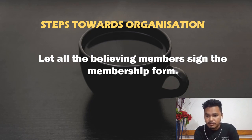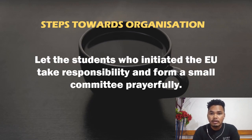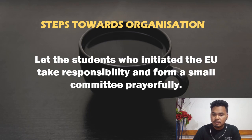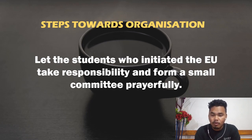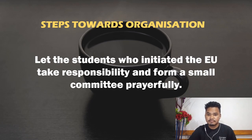Let everyone willing — whether five, six, or many more — sign the membership form. Let the student who initiated the EU take responsibility and prayerfully form a small committee. You must have a president, secretary, and treasurer, and depending on your needs you can add more office bearers such as prayer secretary, mission secretary, music secretary, or librarian. That completes the process of forming an EU. Thank you.